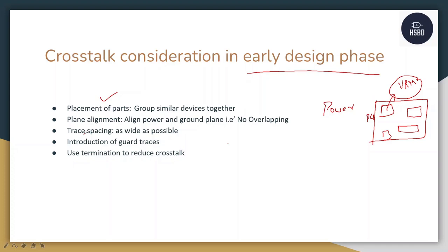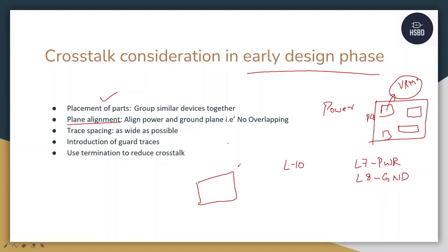The second consideration is plane alignment. For example, in a 10-layer board where layer 7 is the power layer and layer 8 is the ground layer, they should not be intersecting with each other, because both will be acting as a return path to some signals. That will definitely cause some kind of crosstalk. If your power plane on layer 7 and your ground plane on layer 8 overlap, signals at layer 6 using both as return paths will create an overlapping area that causes crosstalk.